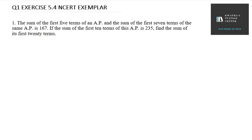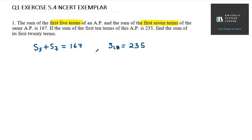Hello everyone. Let's start with question number one, Exercise 5.4. It is given that the sum of first five terms of an AP and the sum of the first seven terms of the same AP is 167. So we can conclude that S5 plus S7 equals 167. The sum of the first ten terms, S10, is 235.